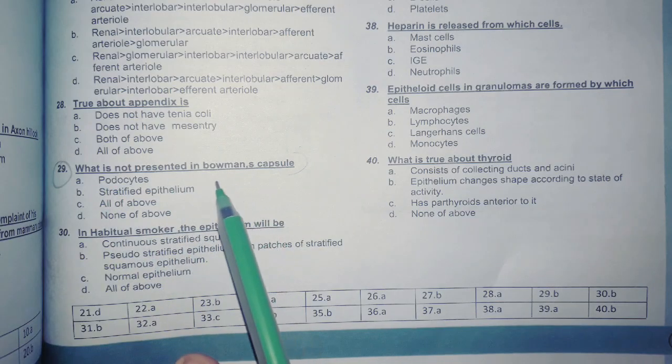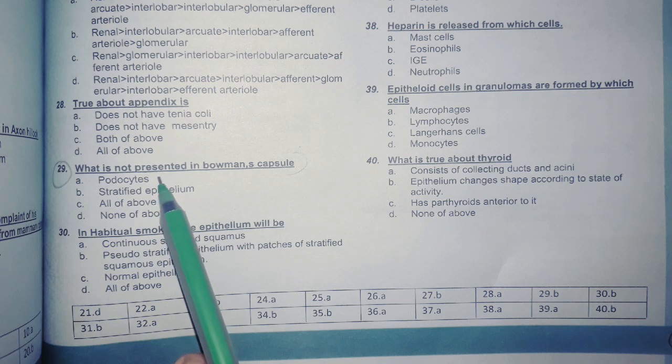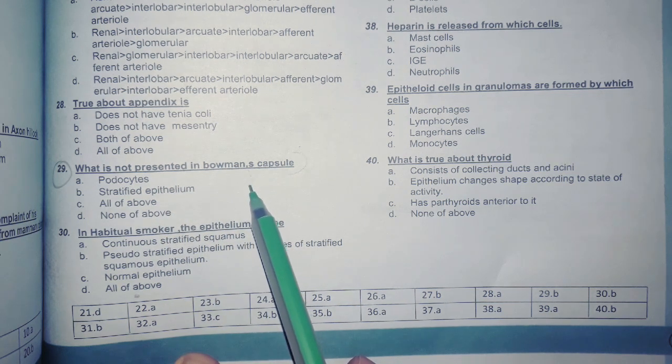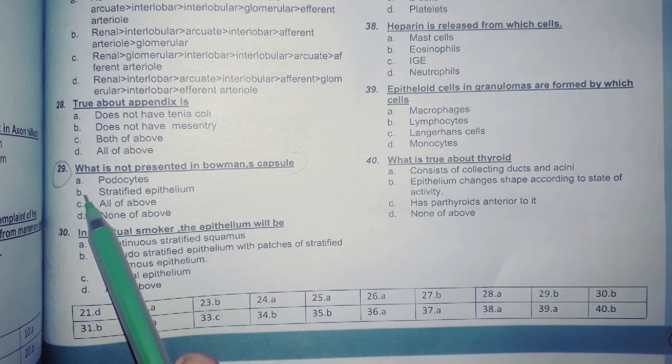What is not present in Bowman capsule? Podocytes, stratified epithelium, all of the above, none of the above. As we know that podocytes is the visceral layer of the Bowman capsule and the parietal layer of the Bowman capsule is made from simple squamous epithelium. So we don't have stratified epithelium. The answer is B.